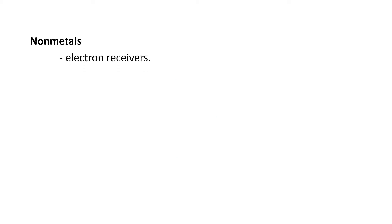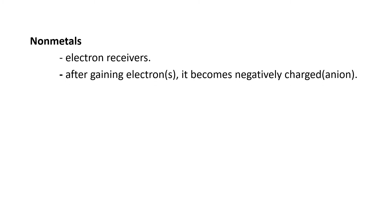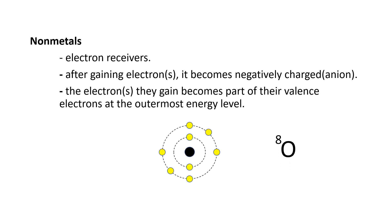For nonmetals, they are the electron receivers. After gaining electrons, they become negatively charged and we call them anions. The electrons that they gain become part of their valence electrons at the outermost energy level. For example, we have the atomic structure of oxygen, wherein the atomic number is eight. That means it has eight electrons. At the outermost energy level, as you can see, it has six valence electrons.